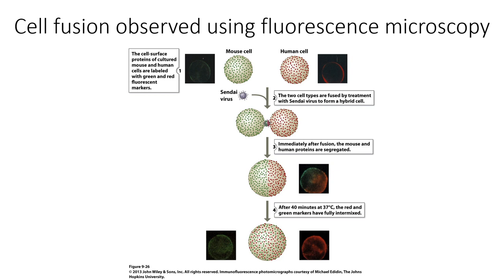This next experiment uses fluorescence microscopy, where you can see the changes as you go. We start out with two different cells — one is a mouse cell and one is a human cell. The mouse cell is labeled in green and the human cell is labeled in red, as you can see in these fluorescence micrographs. The mouse cells and human cells are in a dish together, and in the lab they added a Sendai virus, which helps these two cells to fuse together to form a hybrid cell, part mouse and part human.